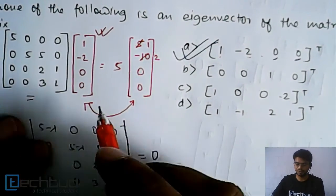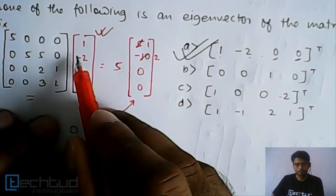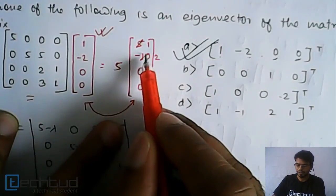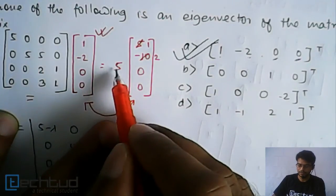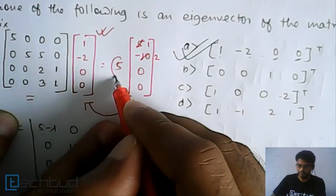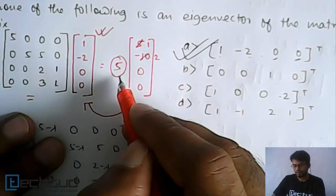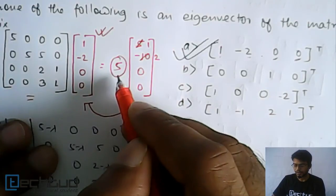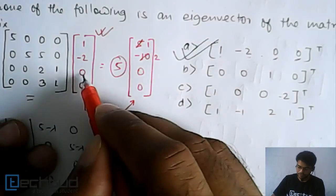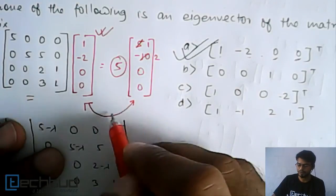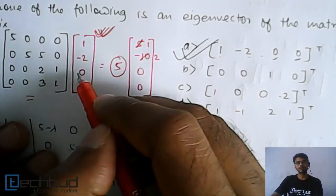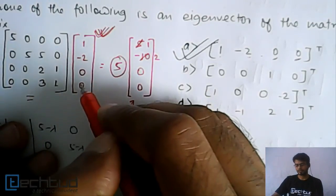To repeat: once you multiply a vector with the matrix, whatever result you get — if you take something common and you recover the original vector — then that vector is a correct eigenvector. The scalar you factor out is basically the eigenvalue. So this is the property you should remember to easily solve this problem.